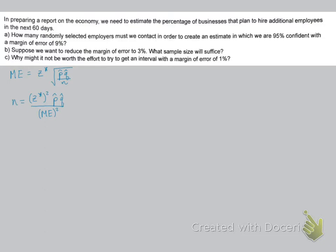So in this formula, we need to know what z star is, p hat, q hat, and the margin of error. The margin of error is always given to us in the problem, and q hat comes from p hat. So the two questions I always get are, how do I figure out what z star is, and how do I figure out what p hat is?